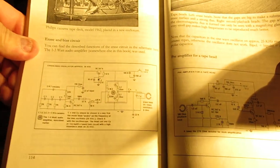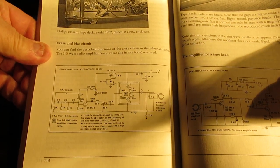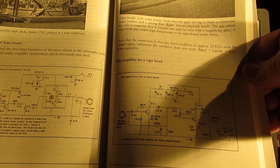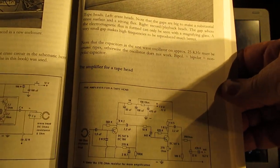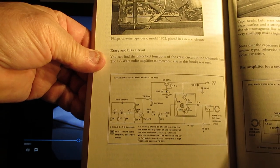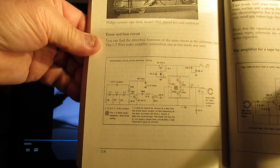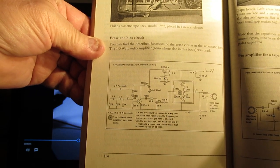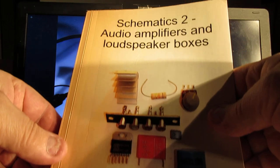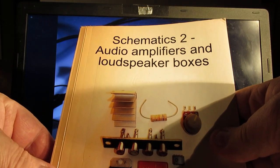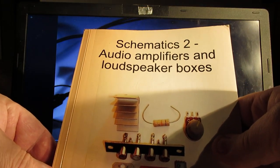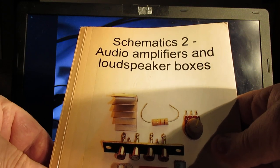Here are two circuits that are published in my book: pre-amplifier for a tape head and erase bias oscillator on approximately 26 kilohertz. It's in this book. Buy it when you want to know more about the circuit.